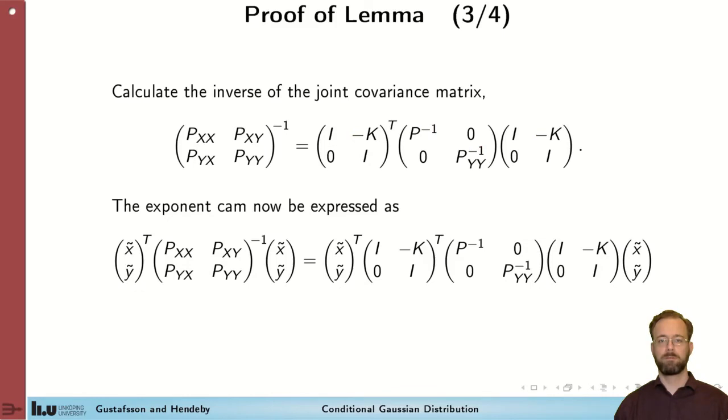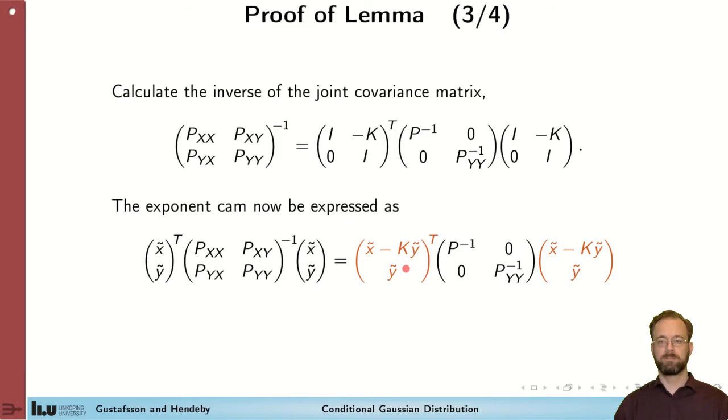Now we'll compute the full exponent of the joint Gaussian distribution. And this is the expression that's given from the start. We now introduce our factored inverse, get this. Then we multiply these two matrices together. Likewise with these. And we get this form.